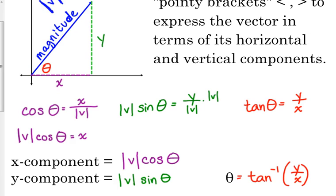It'll give you different pieces of information. Sometimes, you'll be given the magnitude and the angle, and you'll be asked to find the components. Sometimes, you'll be given the components and asked to find the magnitude and the angle. It just kind of depends.